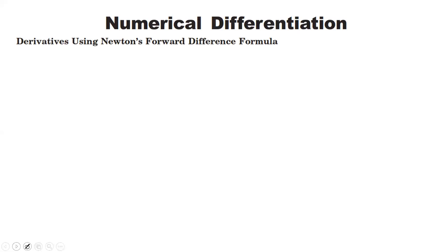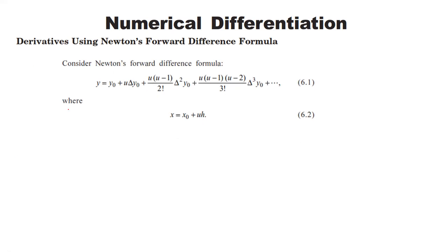We start with the derivative using the Newton forward difference formula. Here y is equal to y0 plus u·Δy0 plus u(u−1)/2! · Δ²y0. We set x equal to x0 plus uh, and we need to find dy/dx.